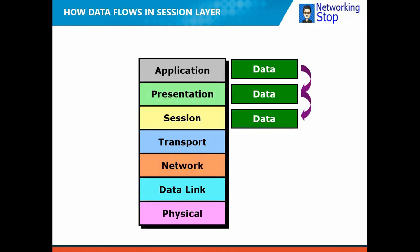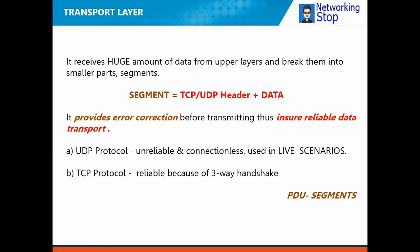Moving to the lower layers — layer 4 is the transport layer. The transport layer receives a huge amount of data from the upper layers — application, presentation, and session. It breaks down the data into smaller chunks and adds TCP or UDP headers along with source and destination port numbers. TCP is Transmission Control Protocol, which is reliable and connection-oriented. UDP is User Datagram Protocol, which is unreliable and connectionless. After adding these things, those chunks get converted into what we call segments.